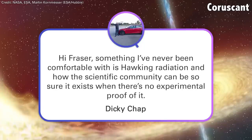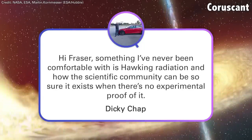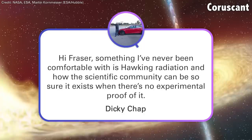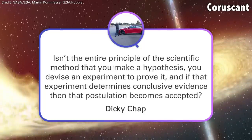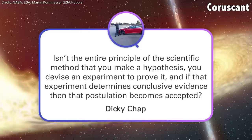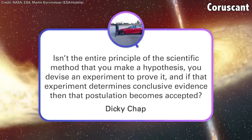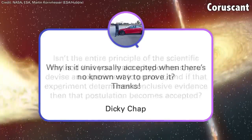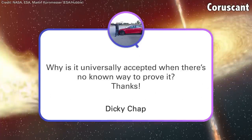Dickey Chat asks: something I've never been comfortable with is Hawking radiation — how can the scientific community be so sure it exists when there's no experimental proof of it? Isn't the entire principle of the scientific method that you make a hypothesis, devise an experiment to prove it, and if that experiment determines conclusive evidence, the postulation becomes accepted? Hawking radiation is absolutely not universally accepted.